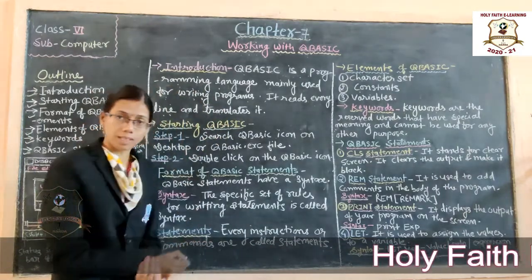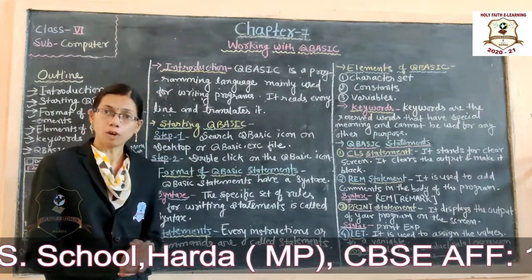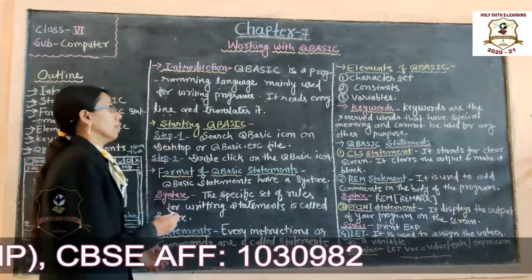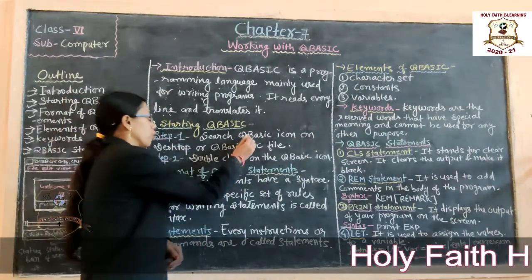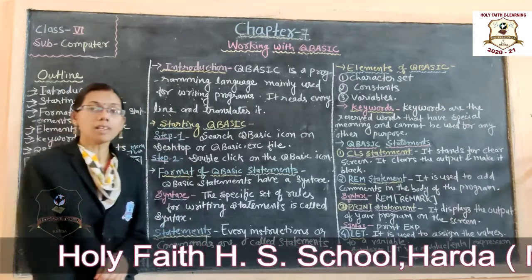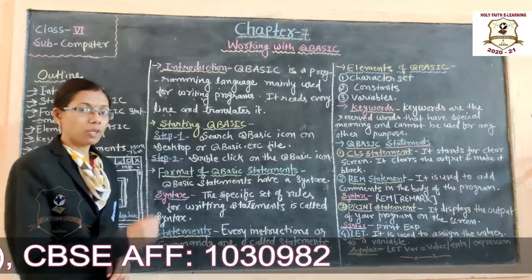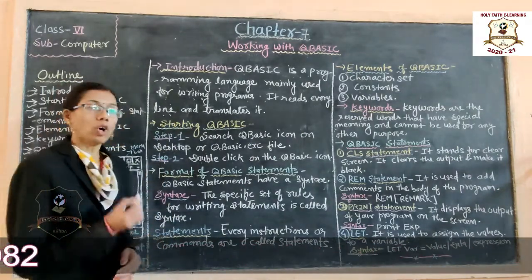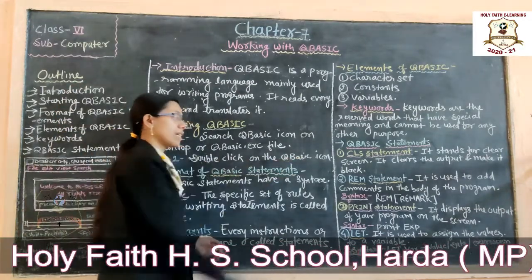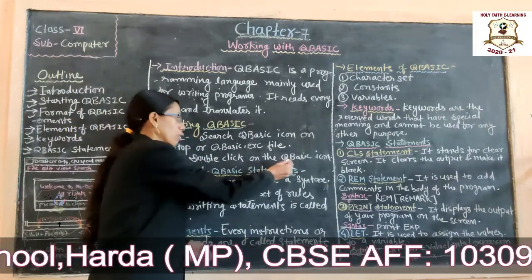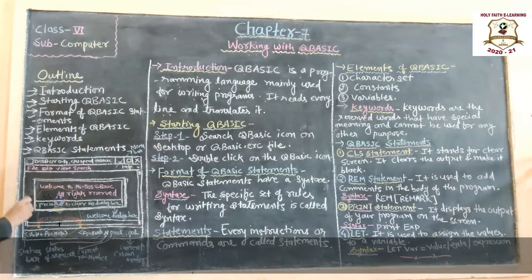How can we start Q-Basic? To start Q-Basic, we have to follow some steps. Step one: search for the Q-Basic icon on the desktop. If it is already on your desktop, double-click it; otherwise, search for the Q-Basic .exe file. Step two: double-click on the Q-Basic icon, and the Q-Basic window will appear on your screen.